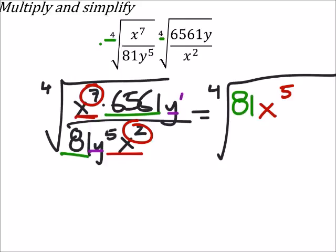Then I've got my y's here. I've got y to the power of one, which will cancel out one of these five, which in the denominator would give me y to the power of four.